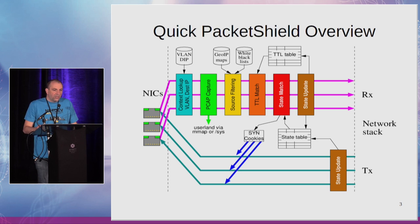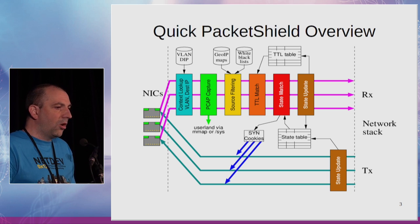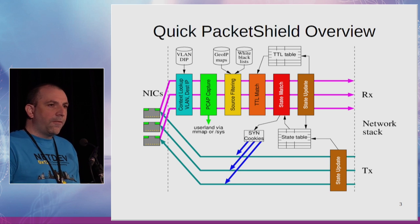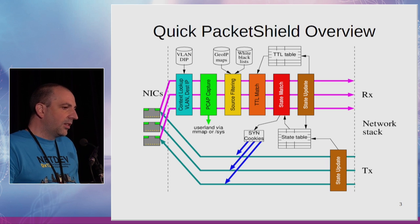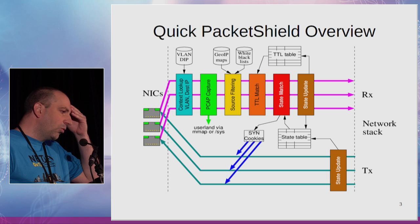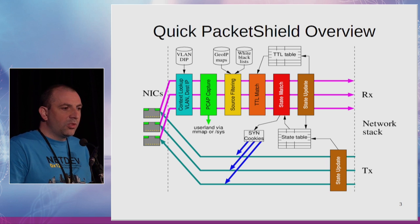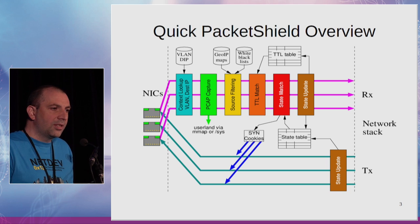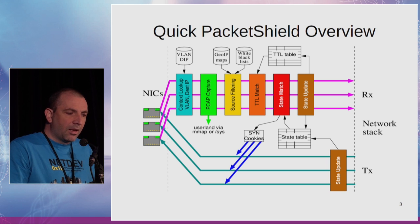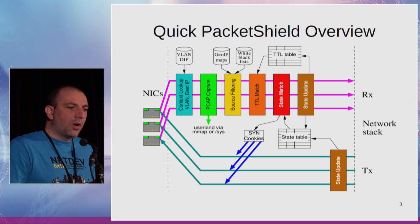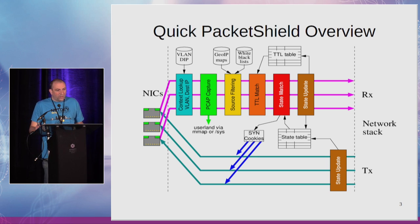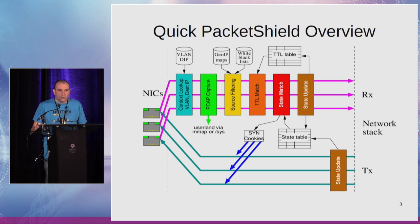PacketShield is a per-packet-based application which submits incoming packets to different stages of filtering or classification. Some stages need a fast lookup on VLAN plus destination IP. This first lookup is done to make the choice of the configuration to use, because PacketShield is multi-tenant. There are also other stages which need fast lookups on subnet sources for geolocation filtering or blacklist filtering. In addition, this application needs fast read-write access to some tables. PacketShield is able to learn the TTL values of packets from regular traffic and apply countermeasures to packets which don't present a usual TTL value.